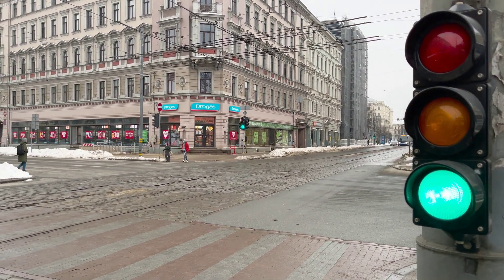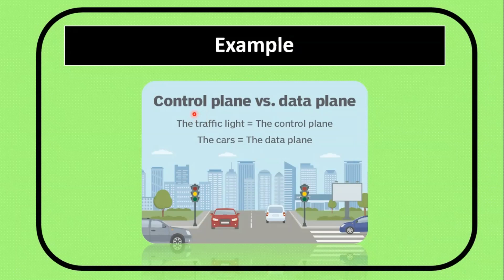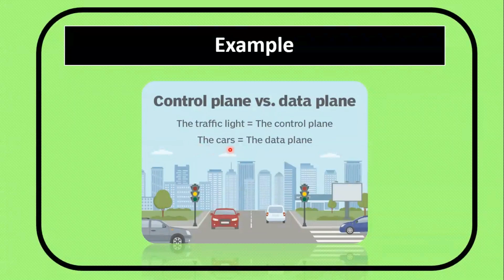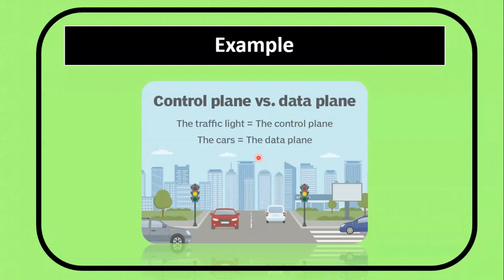Now we will correlate this example with our topic. The control plane maintains the routing table and the data plane forwards the IP packets. Just as the traffic light operates the traffic on the road, the control plane operates the traffic of switches or routers. Cars obey the stop lights and forward traffic on the roads — the same way the data plane obeys the control plane and forwards packets according to the instructions provided by the control plane.